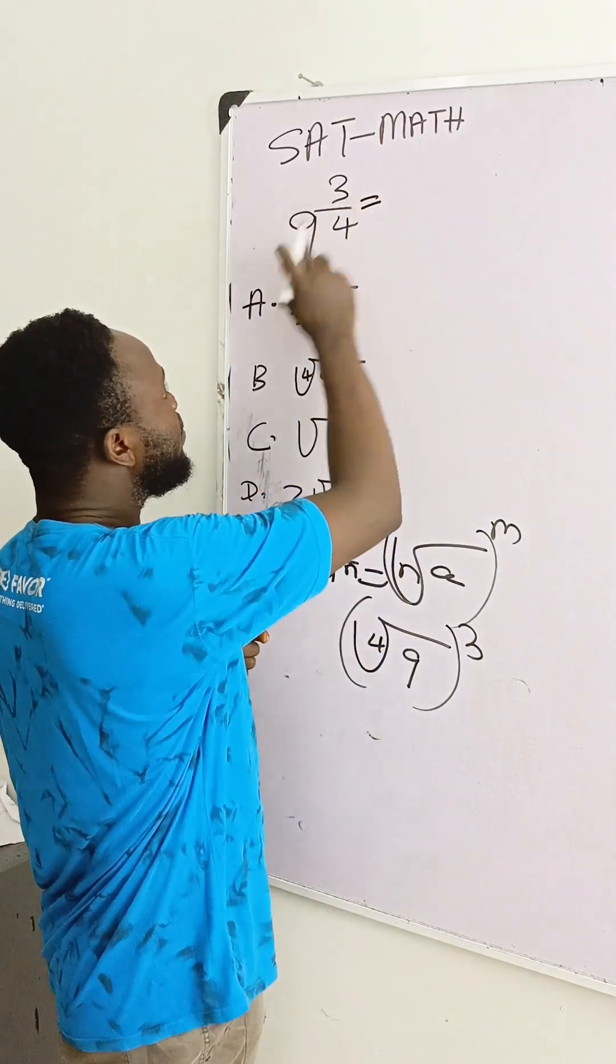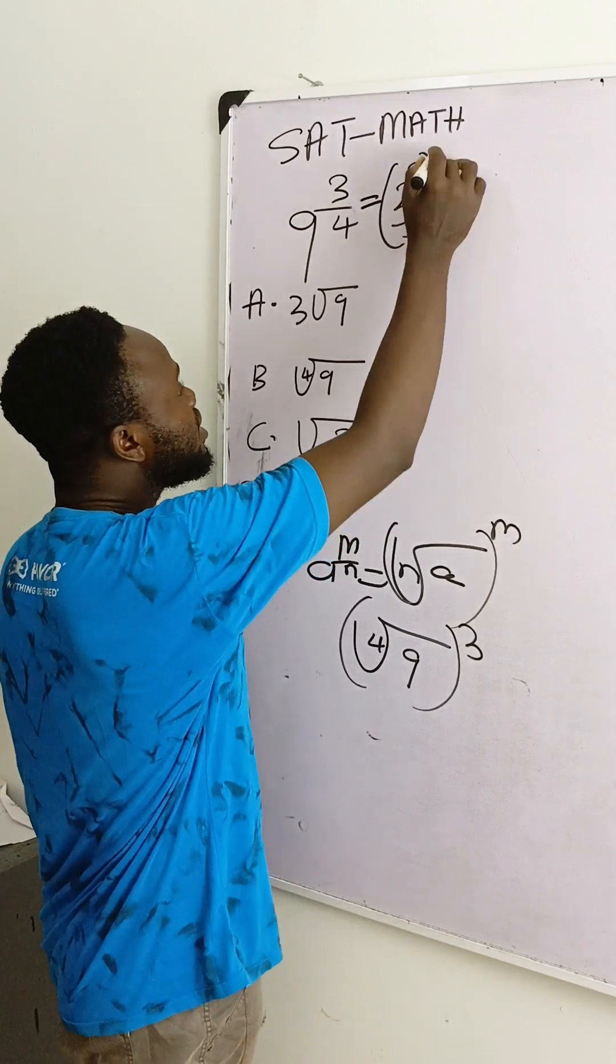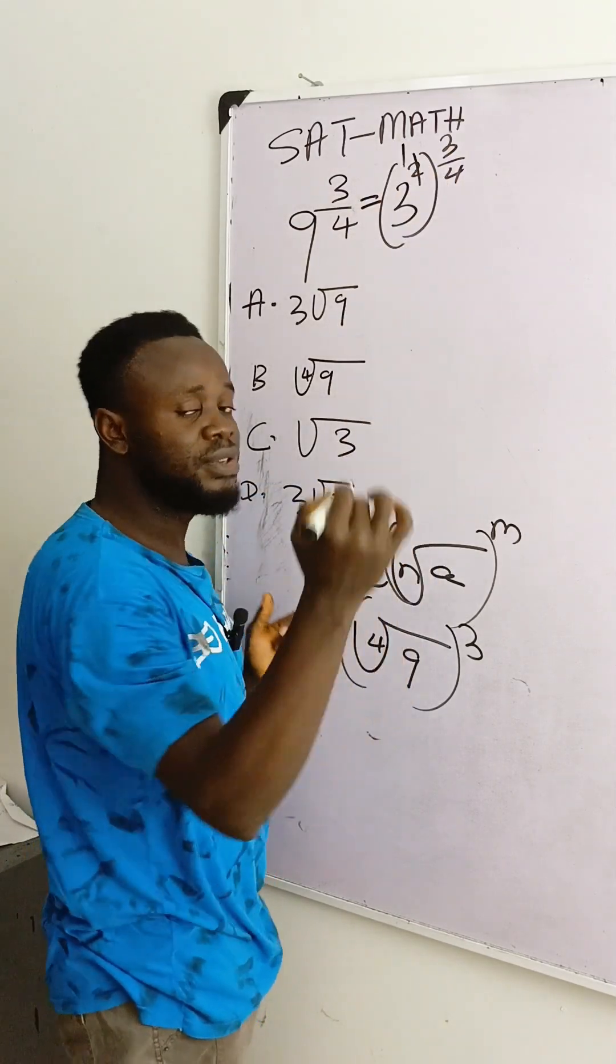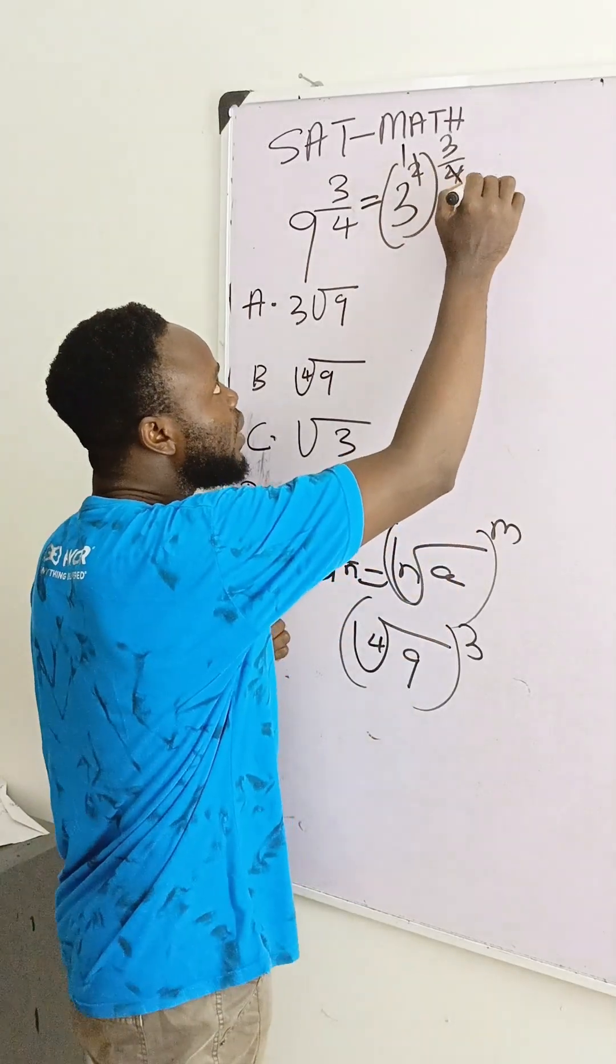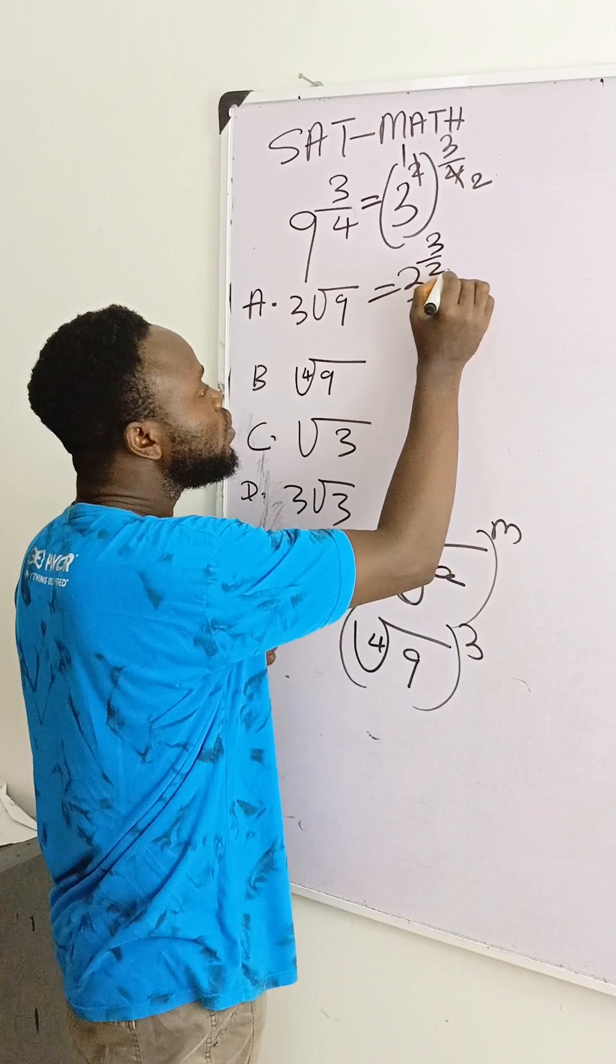Then let's try another way. If you have 9 here, you know 9 is 3 raised to power 2, and it has raised to power 3 over 4. 2 can divide itself, it gives you 1, and 2 can divide 4, it helps you.